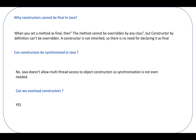Why can constructors not be final in Java? When you set a method as final, the method cannot be overridden by a class — anything that is final cannot be overwritten. But a constructor by definition cannot be overridden. A constructor is not inherited, so there is no need to make it final. That's why constructors cannot be final in Java.